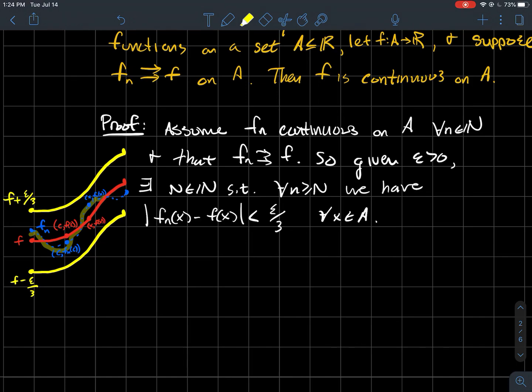And so in my picture what I'm saying is for every single n past this capital N here, all these blue graphs should be in that yellow window. And that should hold for every x in your domain. So remember the uniformly continuous hypothesis, that meant that this N here, it didn't depend on what x you're at. That N only depends on the epsilon that somebody randomly gave you. So that's going to work for every x in the domain.